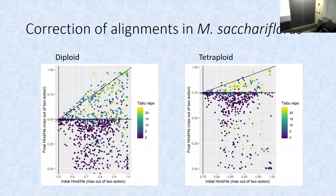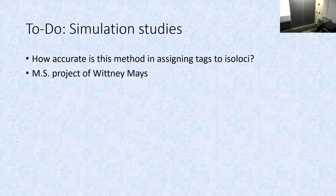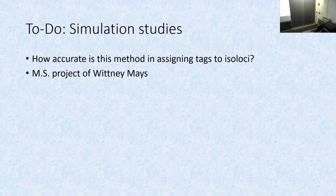Looking at starting HN/HE on the x-axis versus final HN/HE after running the algorithm on the y-axis: many loci started above expectation but after swapping one or two tags came down to at or below the expected value. This worked in both diploid and tetraploid miscanthus — tetraploid on top of being allotetraploid. This is all empirical data, so I don't know if I got it right; I just know the statistic looks better. My master's student Whitney Mays is simulating sequence tags from an allopolyploid genome and simulating read depth to test whether the algorithm finds the right answers.